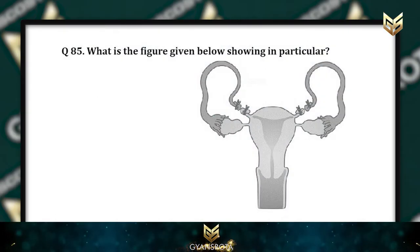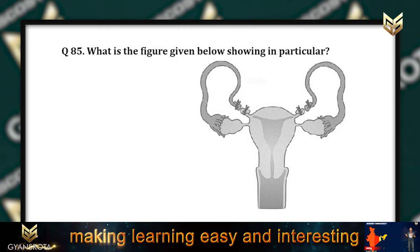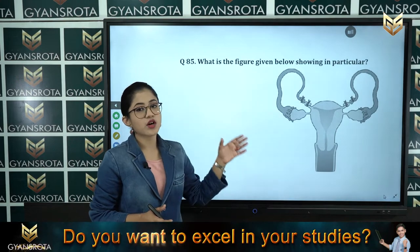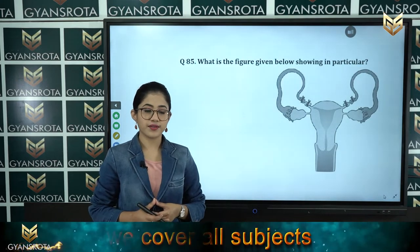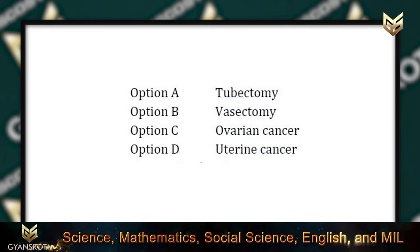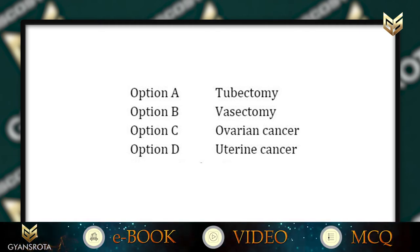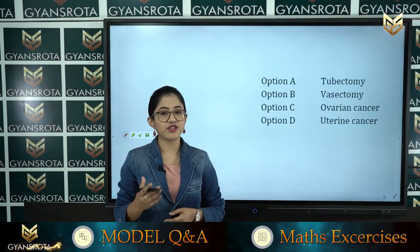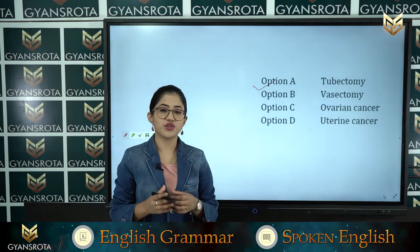Now question number 85: What is the figure given below showing in particular? This diagram is from the chapter reproductive health. The options are: Option A tubectomy, Option B vasectomy, Option C ovarian cancer, Option D uterine cancer. The correct answer is tubectomy, given in option A.